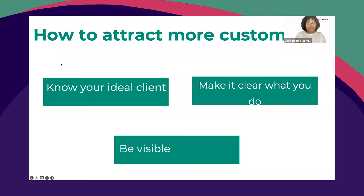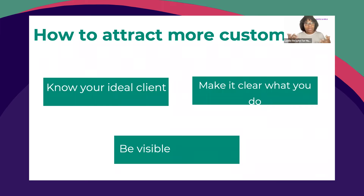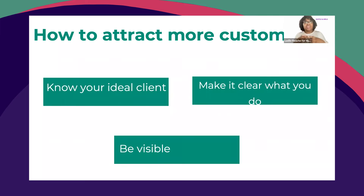You also have to make it clear what it is that you do. Most of the time when a business owner is asked what they do, they tell people their job title — they'll say they're an accountant or a career coach. But that doesn't really tell people what you do or who you work with. Having a clear message about what you do means that when you go to a networking event and introduce yourself, if you make it clear exactly what you do and who you work with, there are going to be people listening who will think: this person helps new business owners manage their books in a really easy and simplistic way — that's exactly what I need. Because you're being clear, you're attracting the attention of the right people.